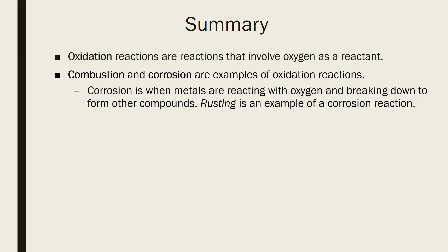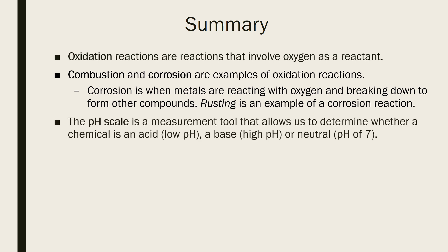Corrosion is when metals react with oxygen and break down to form other compounds. Rusting is an example of a corrosion reaction. The pH scale is a measurement tool that allows us to determine whether a chemical is an acid with a low pH, a base with a high pH, or neutral with a pH of 7.